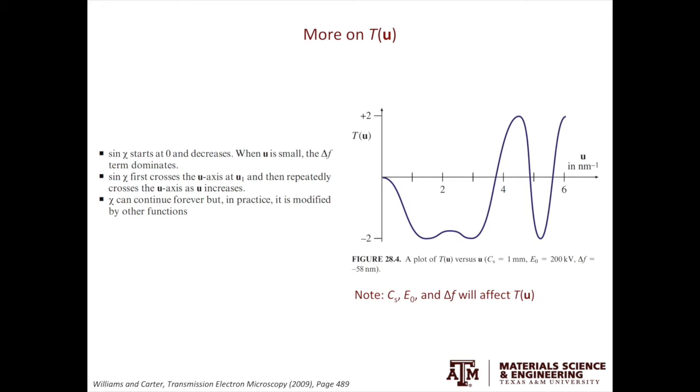Let's plot T(u), not worrying about the aperture function and the envelope function. So we can just focus on the sin chi-u. The sin chi-u will start at zero and decreases initially as u increases. As H(u) further increases, you will have the first crossover called u1. The value of u1 is very important because that tells you the resolution limit. Below u1, the image is directly interpretable. Notice here H(u) tells us the frequency.